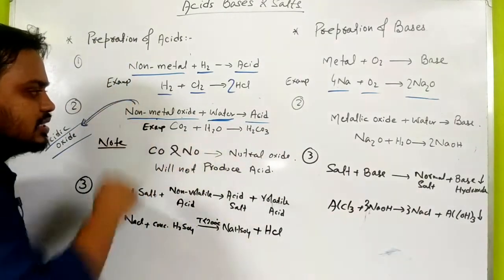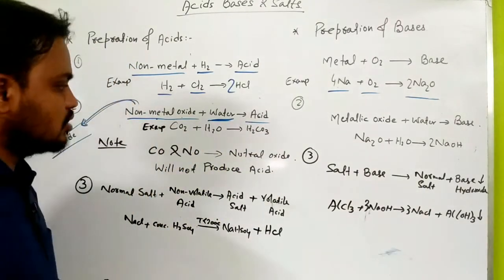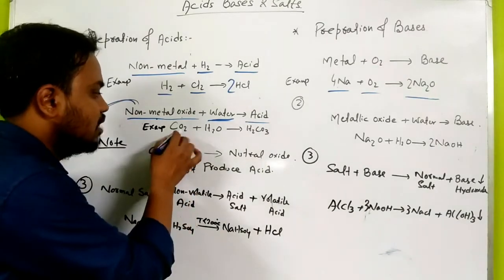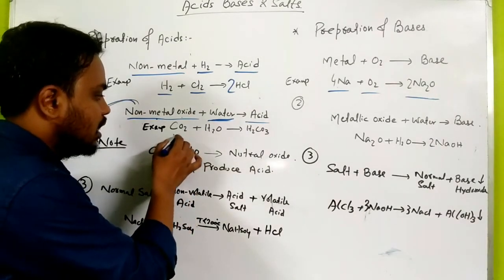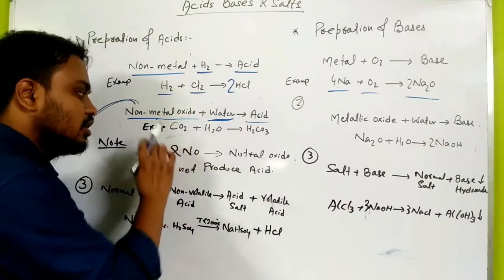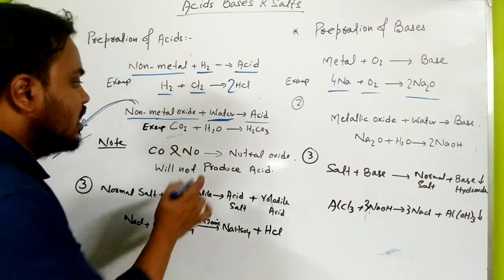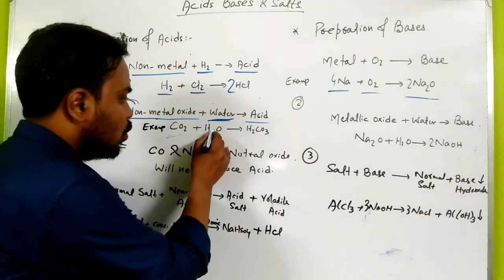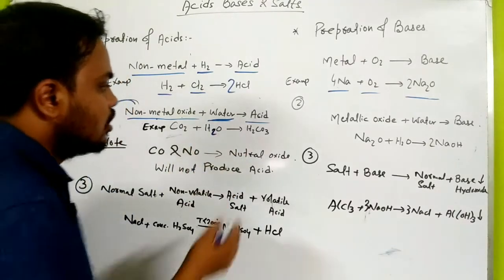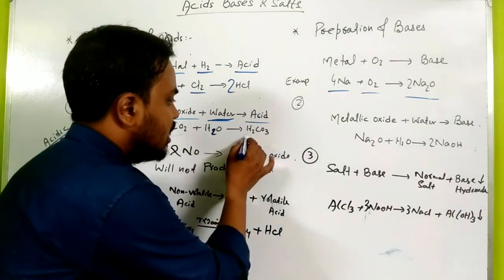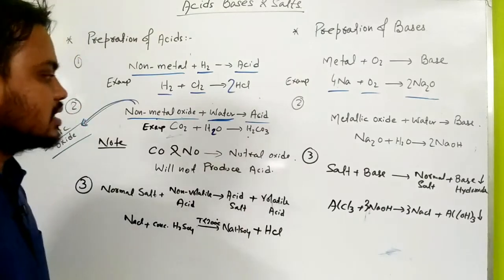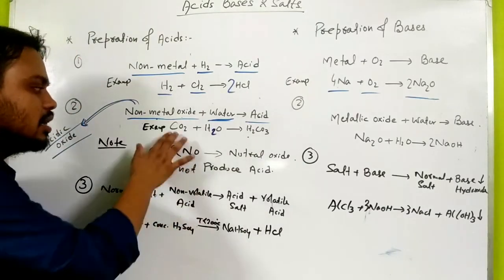For example, carbon dioxide — carbon is a non-metal, so carbon dioxide is a non-metal oxide. When carbon dioxide reacts with water, it forms H2CO3, carbonic acid.